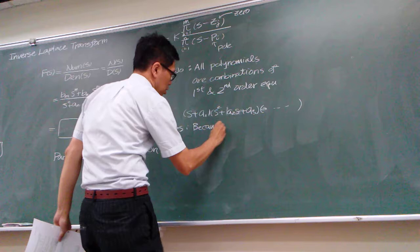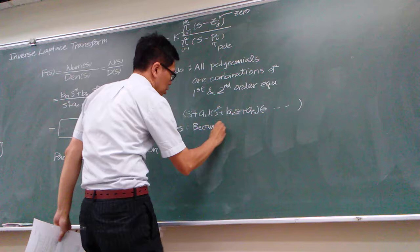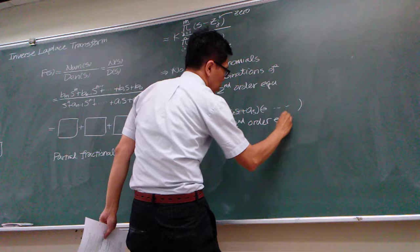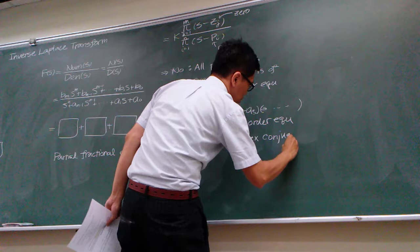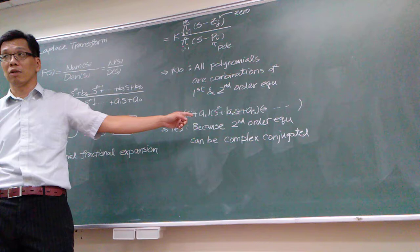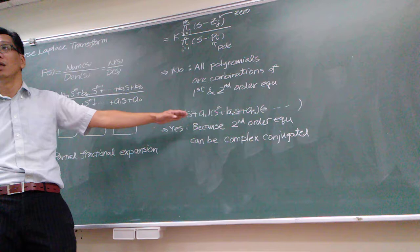A second-order equation can have complex roots. So the roots for your second-order system don't need to be real numbers — they can be complex numbers. That's the reason I say yes, because if the roots are complex numbers, essentially you can convert everything into first-order combinations.